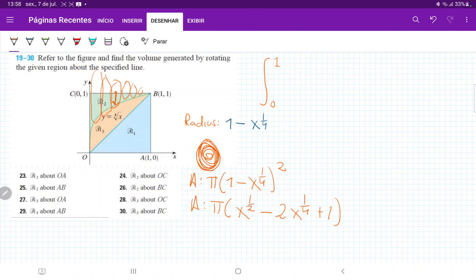Once we've figured out the area of the circle and how to express it, all that's left is to sum up these circles from 0 to 1. So let's put this in the integral: pi times (x to the one-half minus 2x to the one-quarter plus 1) dx.